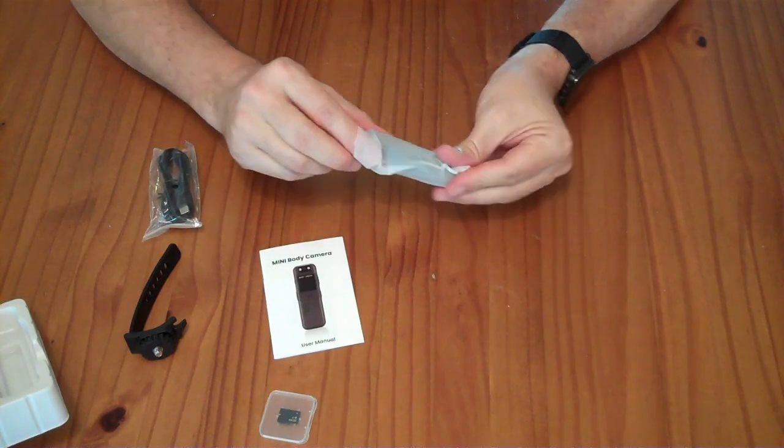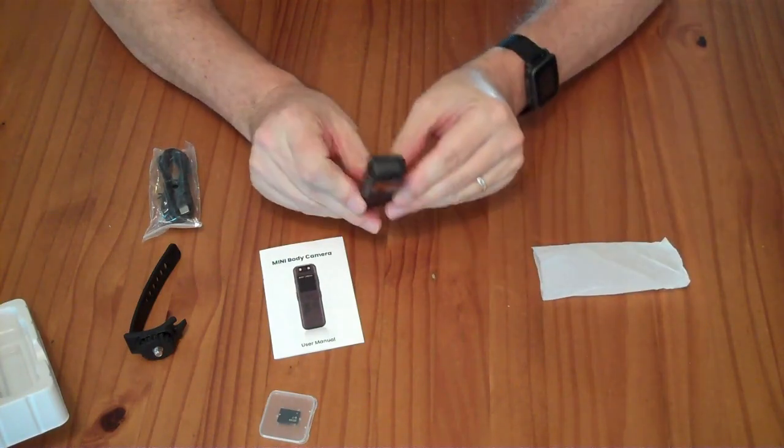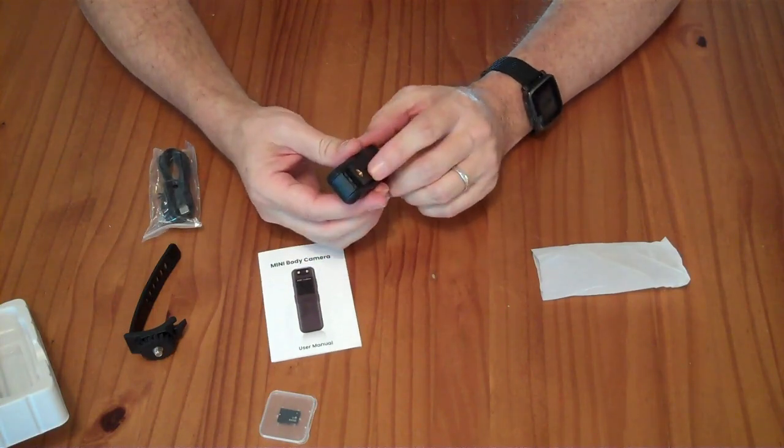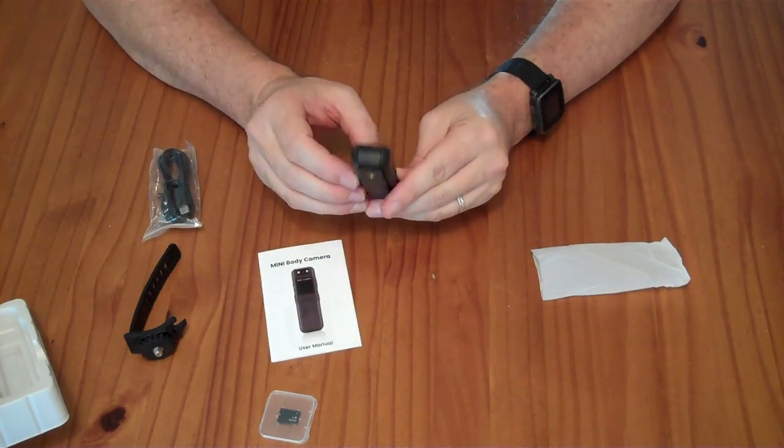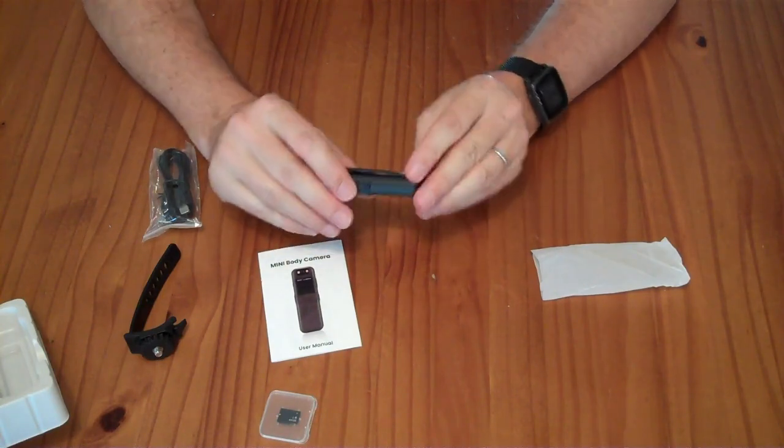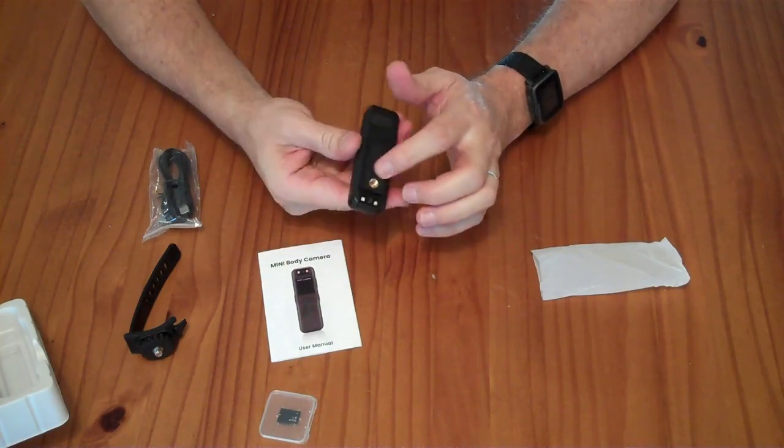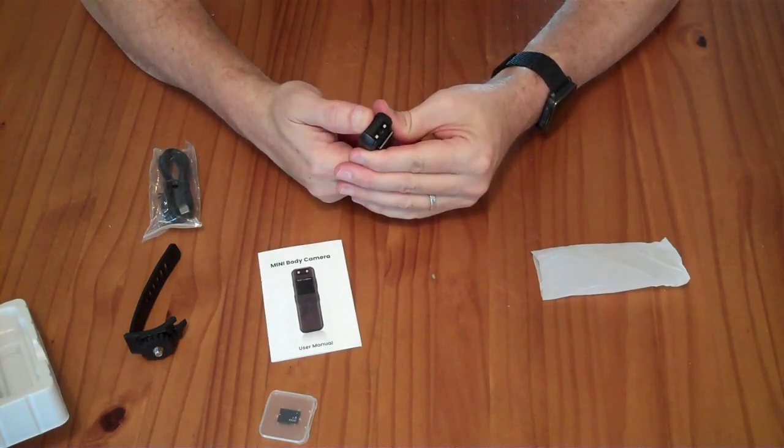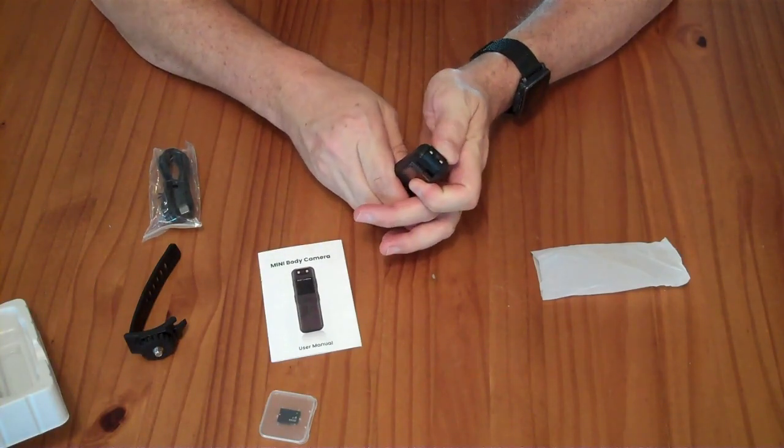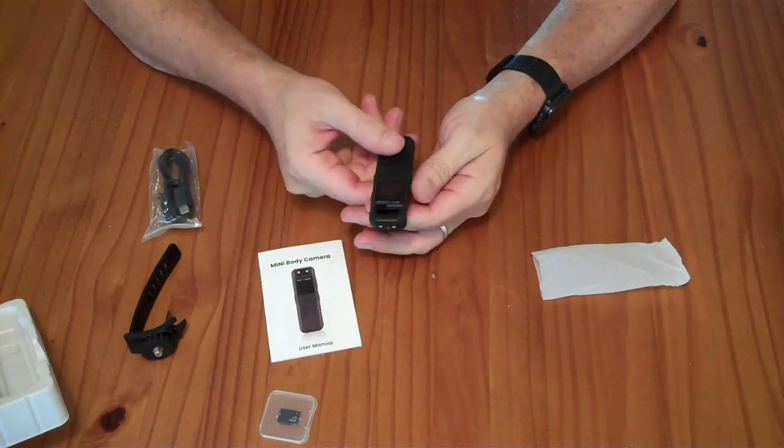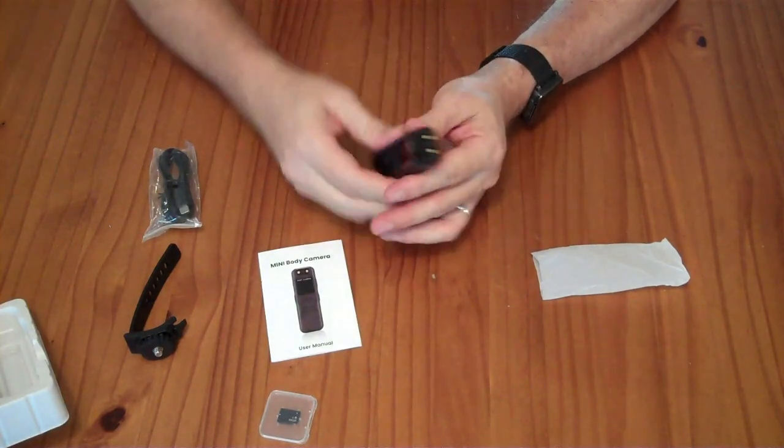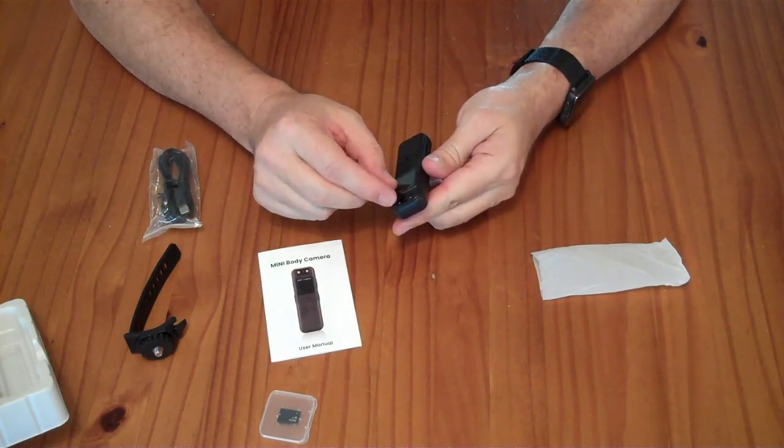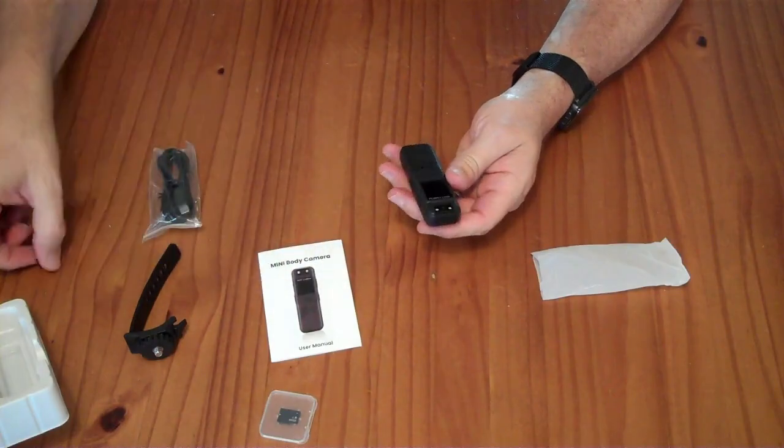And the actual body camera itself, which is quite small. It looks like it has a rotating head, so currently the head's pointing this way, which would be kind of back towards the person because there's a clip here and also the quarter by 20 tripod type mount. And I can rotate this around to point directly up so you could use it as a camera this way or you can rotate it that way. Now there is a tiny little screen with a screen protective cover.